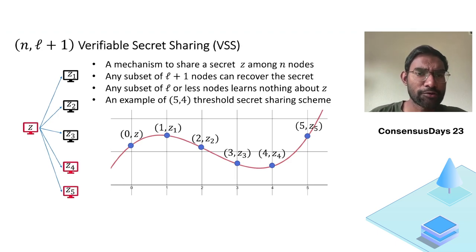Verifiable secret sharing, you can think of this as a protocol notion where one party, known as a dealer, has a secret and the dealer wants everybody else to end up with a share of the secret. Note that in verifiable secret sharing, a subset of nodes including the dealer could be malicious.